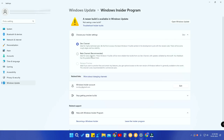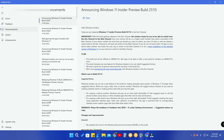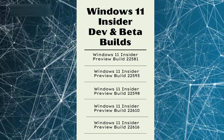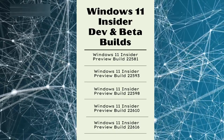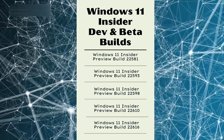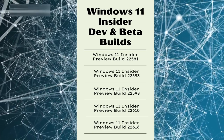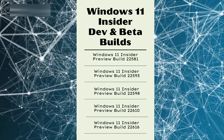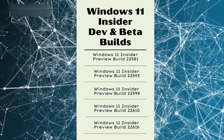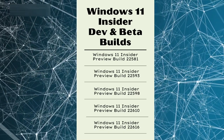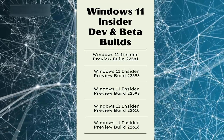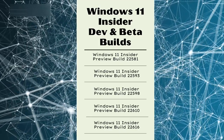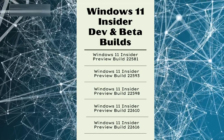In case you've installed the 25115 update, you can no longer change channels. One more thing: in the last five Windows 11 Insider Preview builds — 22581, 22593, 22598, 22616 — if you are using any one of these builds, you can still easily switch from the Windows Insider developer channel to the beta channel. But once you update to 25115, that option is gone.